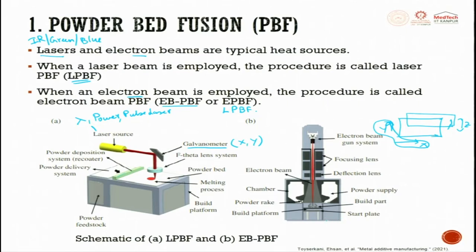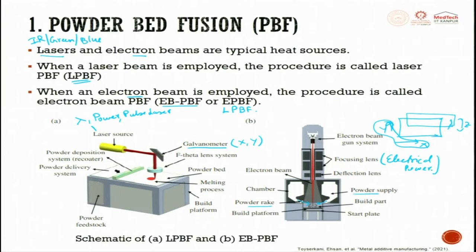For the electron beam process, the powder rack feeds from the sides and powder supply falls onto the build platform. The e-beam hits the workpiece to develop it. Like the f-theta lens in laser, you have focusing lenses and deflection lenses working using electrical power — specifically, an electrical coil focuses the electron beam to one spot, and deflection lenses deviate the beam to hit the surface. So in laser you have an f-theta lens; here you have focusing and deflection lenses to focus on the powder to get the output.